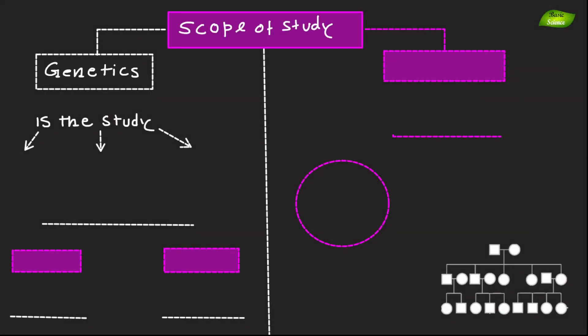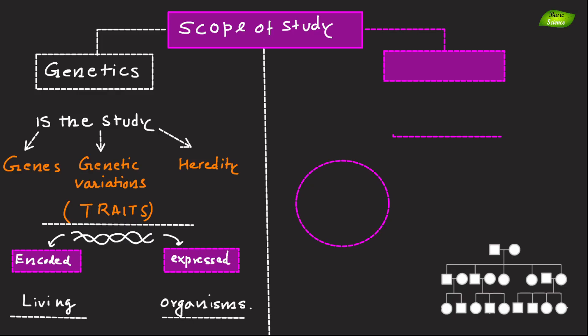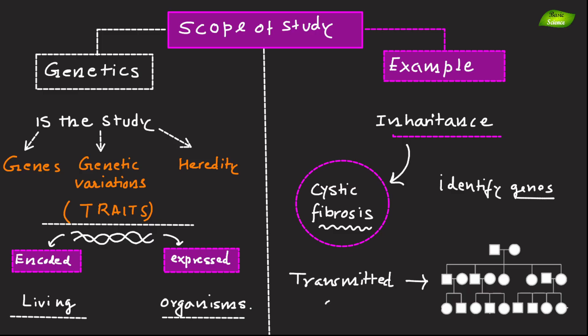Genetics is the study of genes, genetic variation, and heredity in living organisms. It focuses on how traits are passed from one generation to the next and how genetic information is encoded and expressed. An example includes studying the inheritance pattern of genetic disorders like cystic fibrosis to understand the genes involved and how they are transmitted within families.